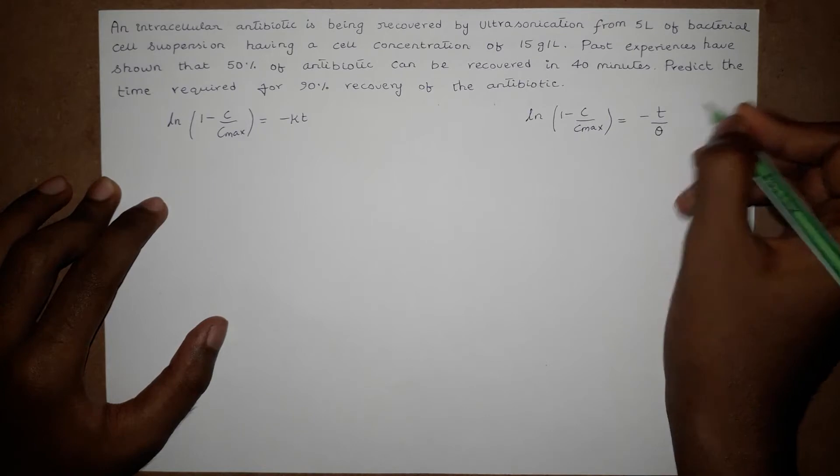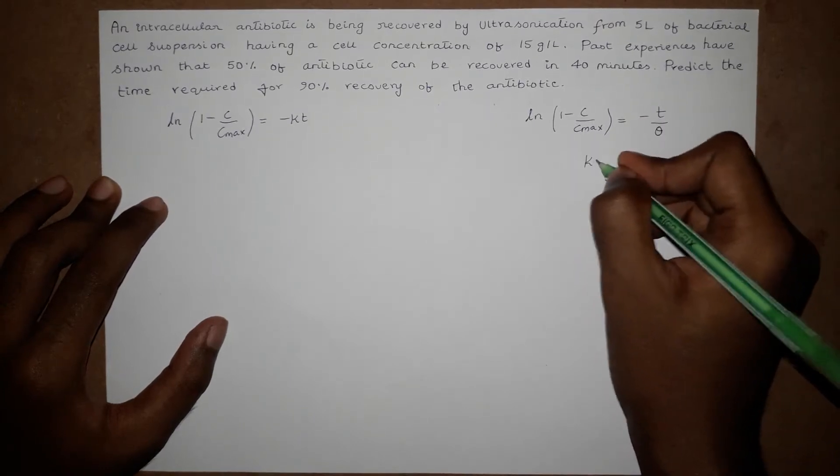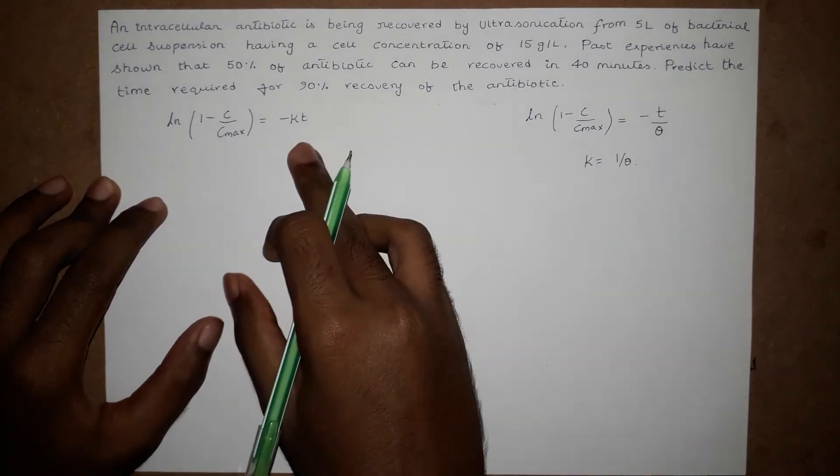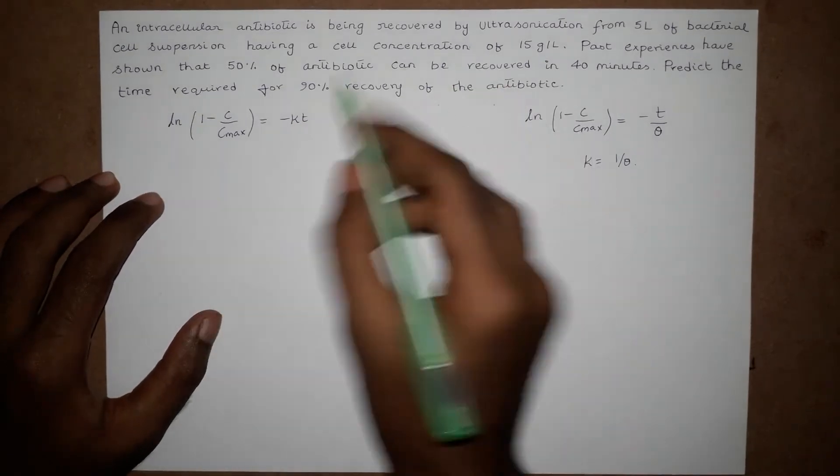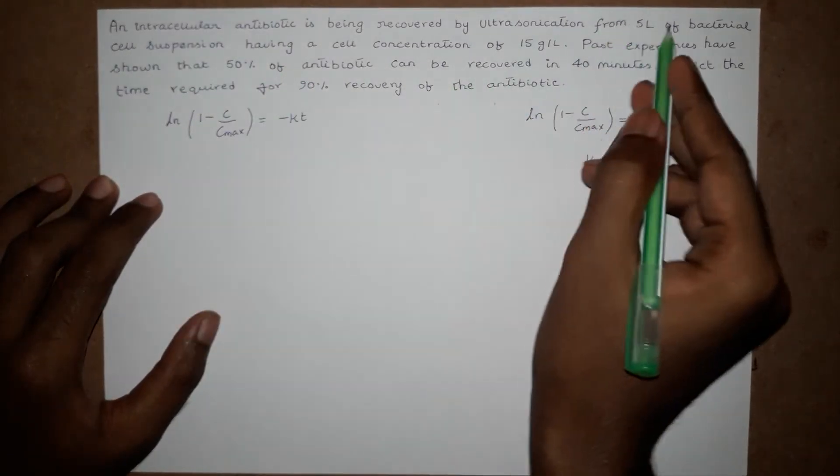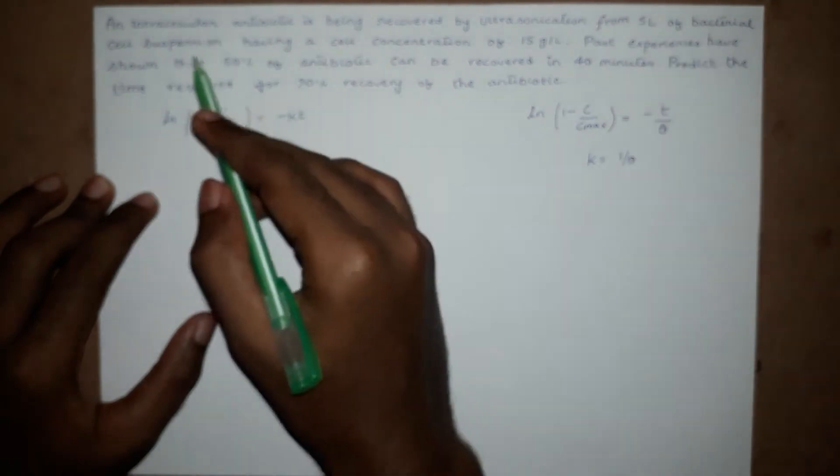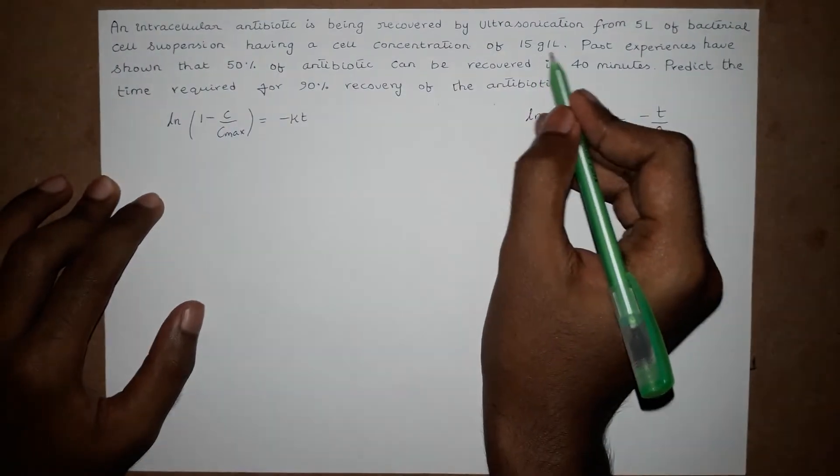For our reference, we take K equal to 1 over theta. In the question, it has been given 5 liters of bacterial cell suspension with a cell concentration of 15 grams per liter.